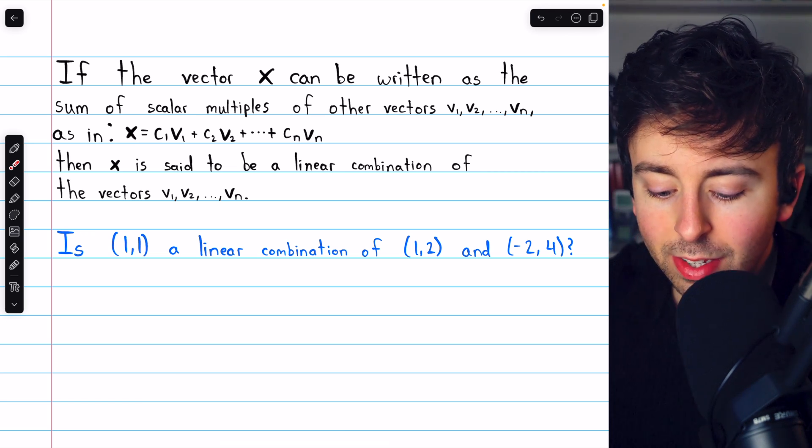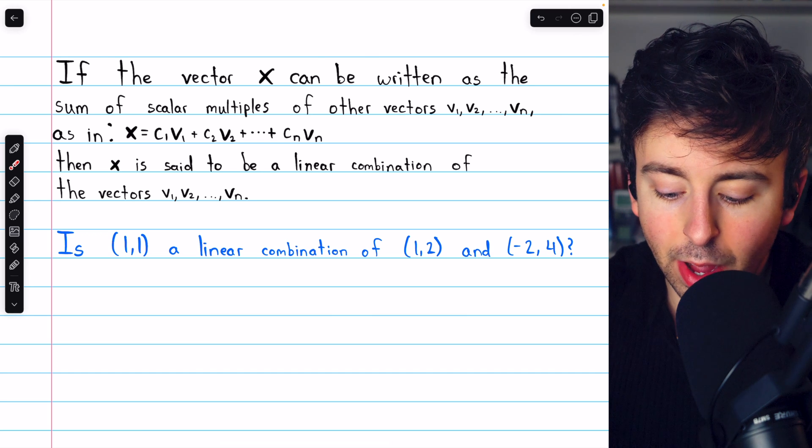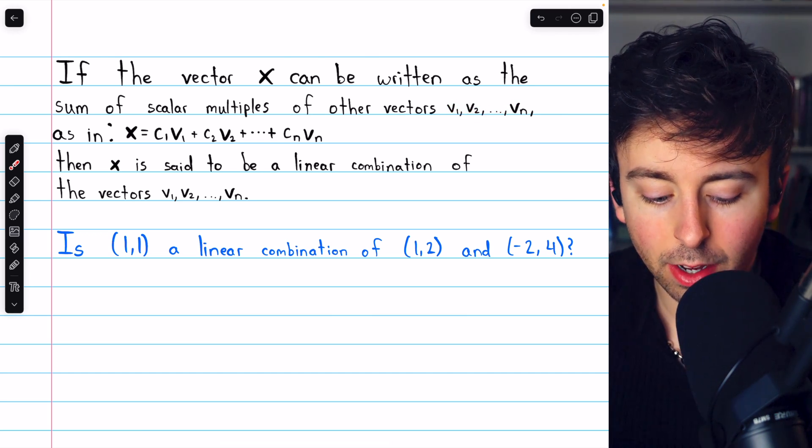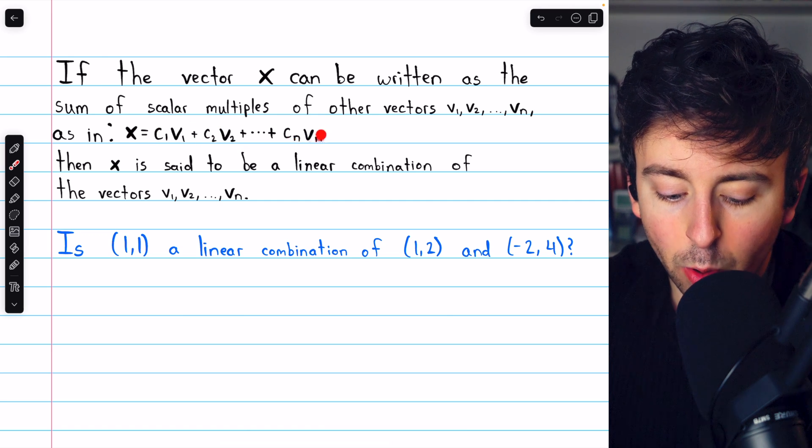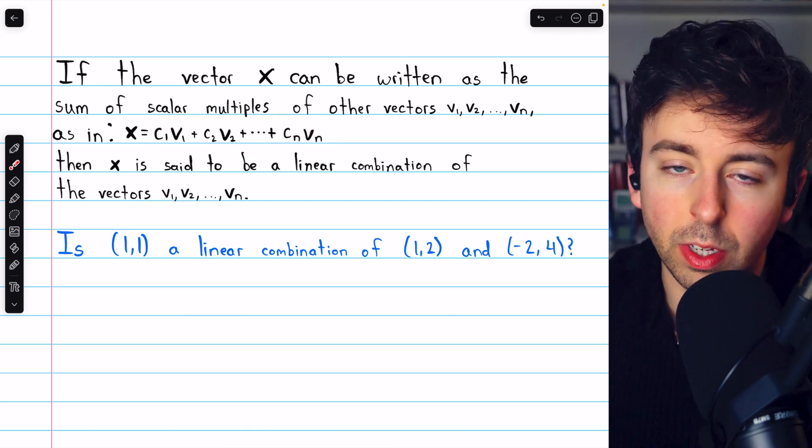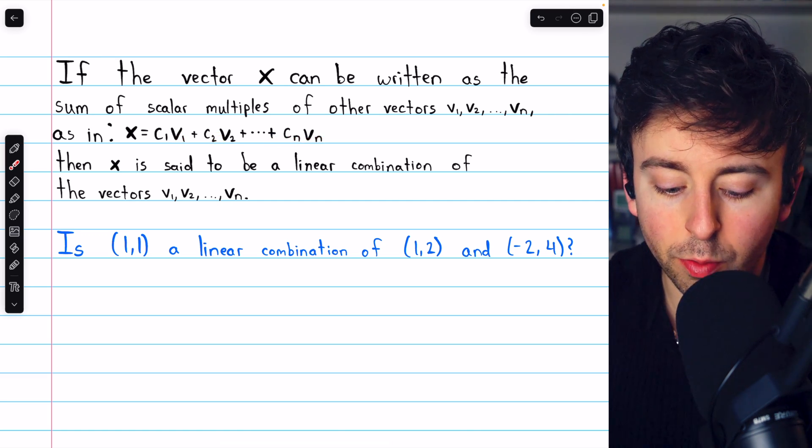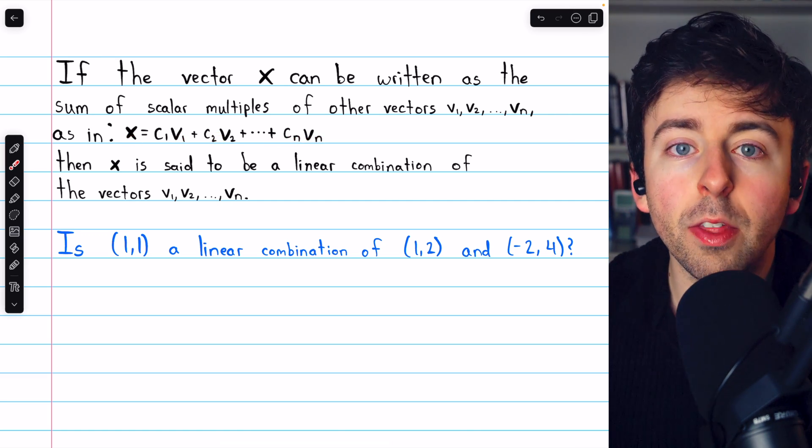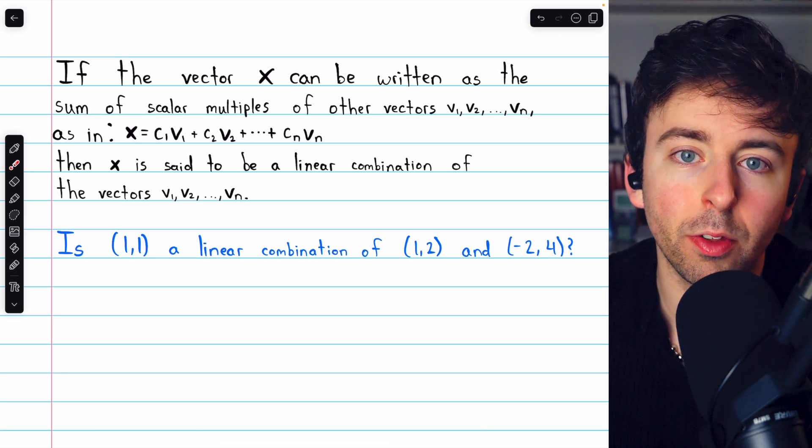Recall that we say the vector x is a linear combination of the vectors v1 through vn if we can express x as a sum of coefficients multiplied by those vectors v1 through vn. In this way, we combine the vectors v1 through vn to produce this other vector x, and x is called a linear combination of those other vectors.